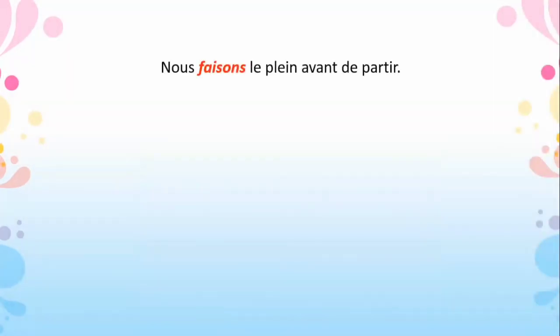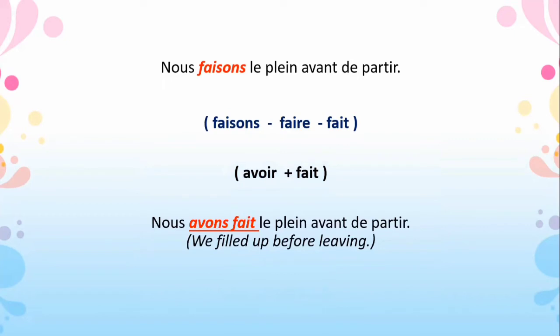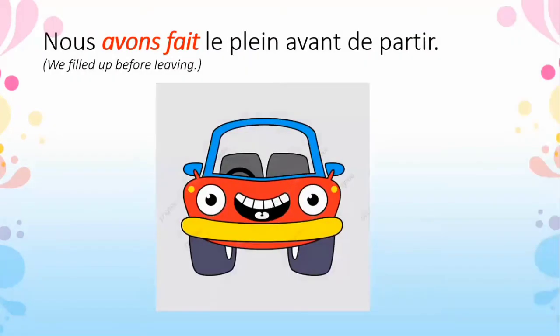Next sentence: 'Nous faisons le plein avant de partir' — we fill up before leaving. 'Faisons' comes from the verb 'faire', which is an irregular verb. The past participle of 'faire' is 'fait' (f-a-i-t). So avoir plus past participle gives us: nous avons fait le plein avant de partir — we filled up before leaving.